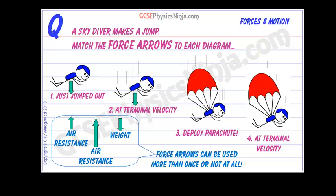The drag force grows until it reaches the same size as the downwards weight force. At that point the forces are balanced — there is no resultant force, so the skydiver reaches a constant speed with no acceleration. We call this the terminal velocity. This is the first terminal velocity of the skydiver.